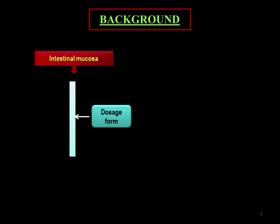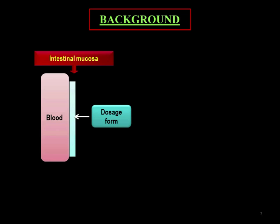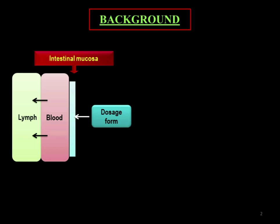Let's come to the background first. Here we can see that one dosage form with lipophilic characteristics goes to the intestinal mucosa where it is absorbed, and then it is further absorbed into the blood. After that, from the blood to the lymphatic system — this is the route of the particular lipophilic drug. This is not very useful for lipophilic drug absorption, making it very tedious to produce therapeutic efficacy and give greater bioavailability in our body.